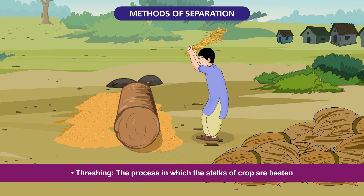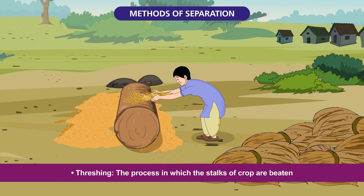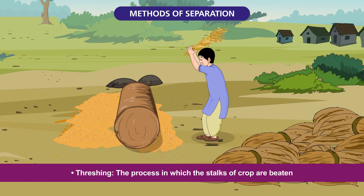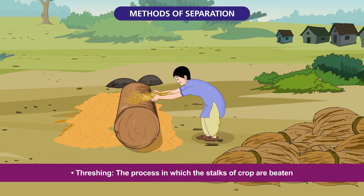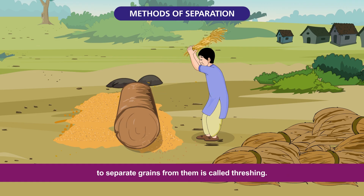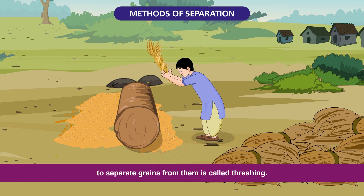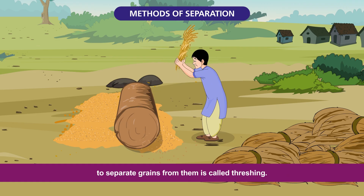Threshing: The process in which the stalks of crop are beaten to separate grains from them is called threshing.